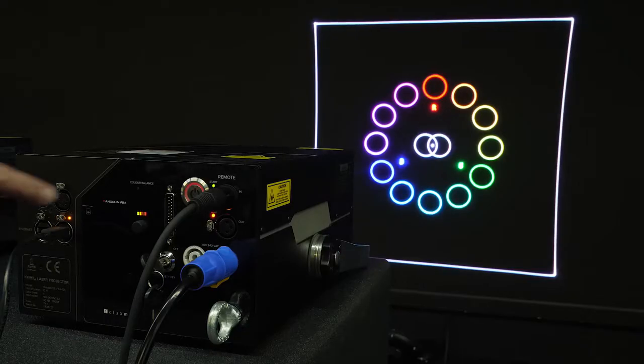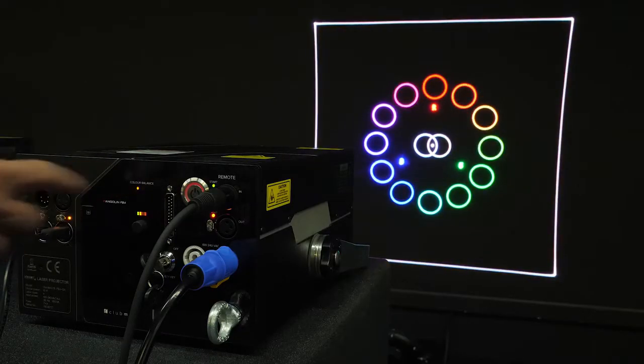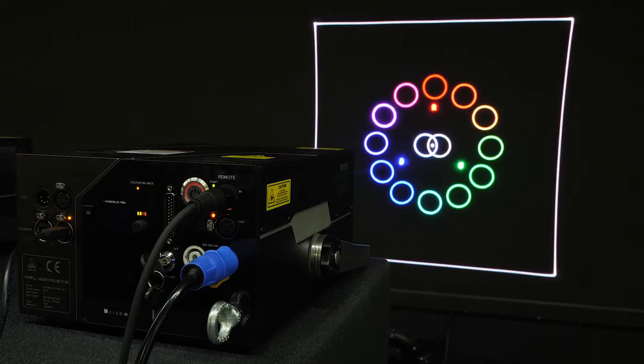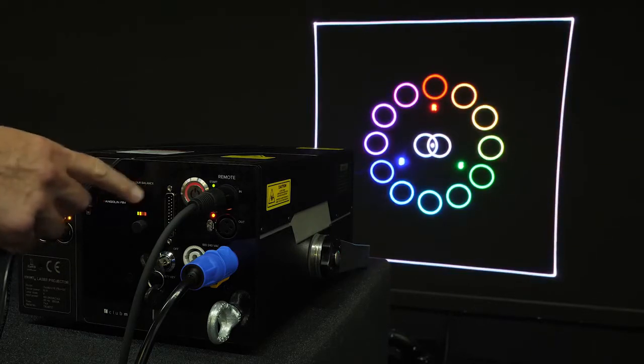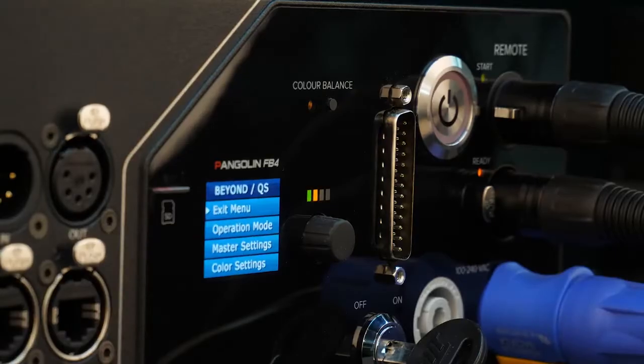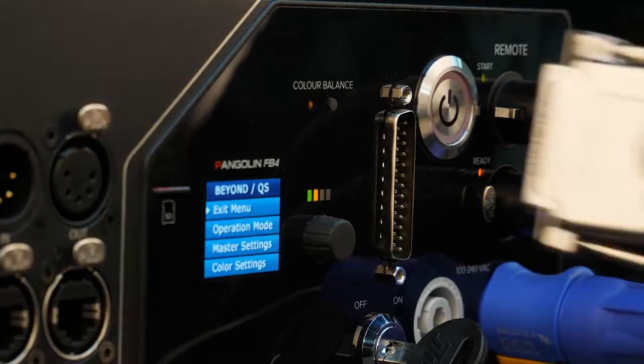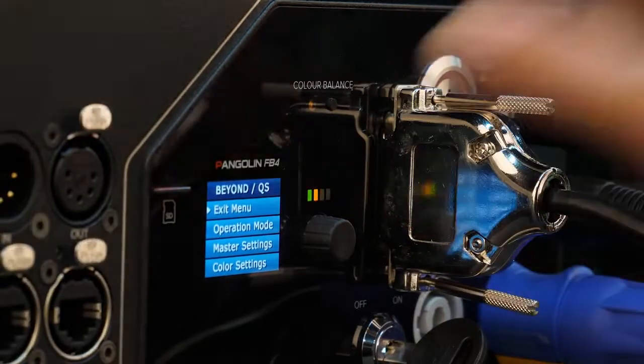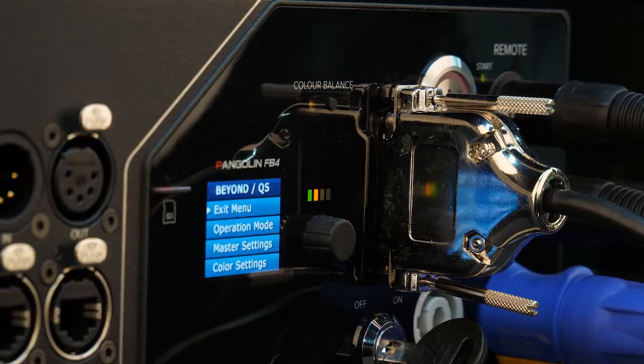It can be recalled by pressing the colour balance button on the rear control panel, and will work not only when you control the projector via in-built FB4 control interface, but also with any other control interface plugged in via ILDA connector.